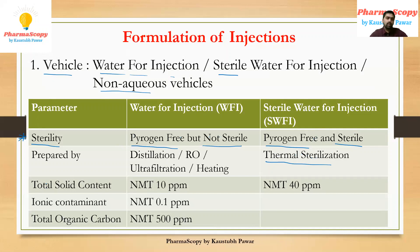To prepare sterile water for injection, we process the water for injection by thermal sterilization, making it absolutely sterile — no single microorganism is present. Therefore sterile water for injection is absolutely sterile, and both vehicles are pyrogen free. The next point is total solid content: for water for injection the limit is not more than 10 ppm, whereas for sterile water for injection the limit is not more than 40 ppm.